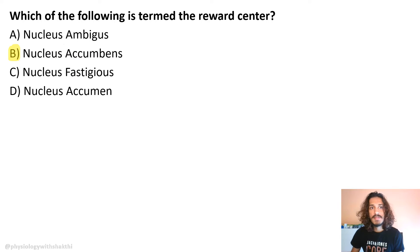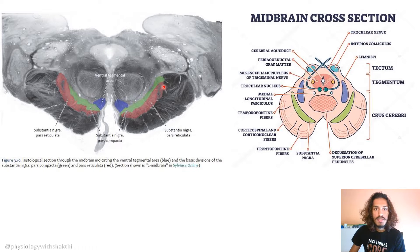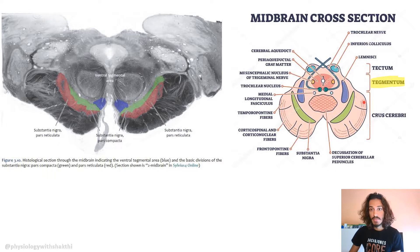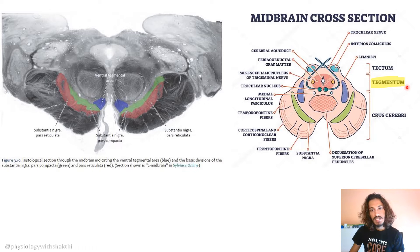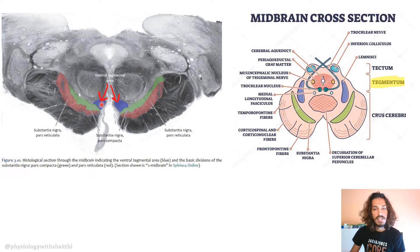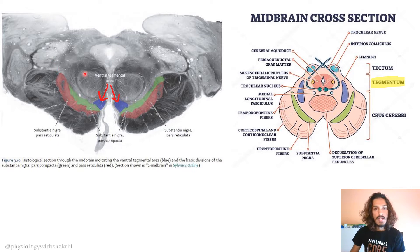When you talk about nucleus accumbens, you have to understand the ventral tegmental area. When you take a cross-section of the midbrain, you can see the tectum, tegmentum, and substantia nigra. The ventral side of the tegmentum is the ventral tegmental area. This is the same structure shown in the diagram — the ventral tegmental area.